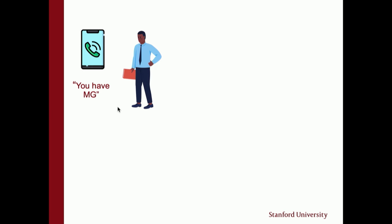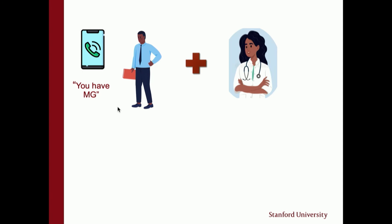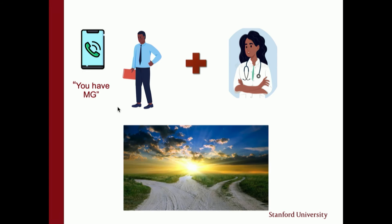Going back to Bill: he was pretty lucky in that very quickly after the onset of his symptoms, he and his doctor were able to make a diagnosis of MG. But for some patients, this journey to a diagnosis can be quite long, sometimes even years. So awareness becomes really important. Once the diagnosis is made, it's going to be a journey of multiple paths. It's a very exciting time to be treating myasthenia gravis because we have innovations and lots of novel therapies that have been approved and in the pipeline.